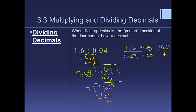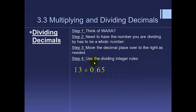Here are the steps for dividing decimals — pause the screen. Step one: think of a reasonable answer. Step two: the number you are dividing by must be a whole number. Step three: move the decimal place to the right as needed for both numbers. Step four: use your integer rules for dividing with negatives.